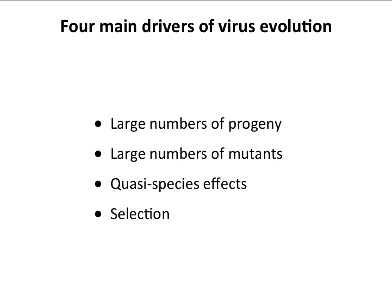We're going to consider the four main drivers of virus evolution — what makes viruses change and adapt to new hosts and new conditions. First: they make a lot of progeny, more than anything else on Earth. Second: they make a lot of mutants, and RNA viruses are kings at this. Third: quasispecies effects — something discovered in viruses we'll discuss. Fourth: selection, which are the pressures that act upon the progeny, mutants, and quasispecies to give you evolution in the end.